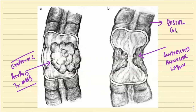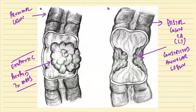Distal colon cancers are on the left side. The exophytic polypoid pattern is basically seen with the proximal colon cancers, which are on the right side.